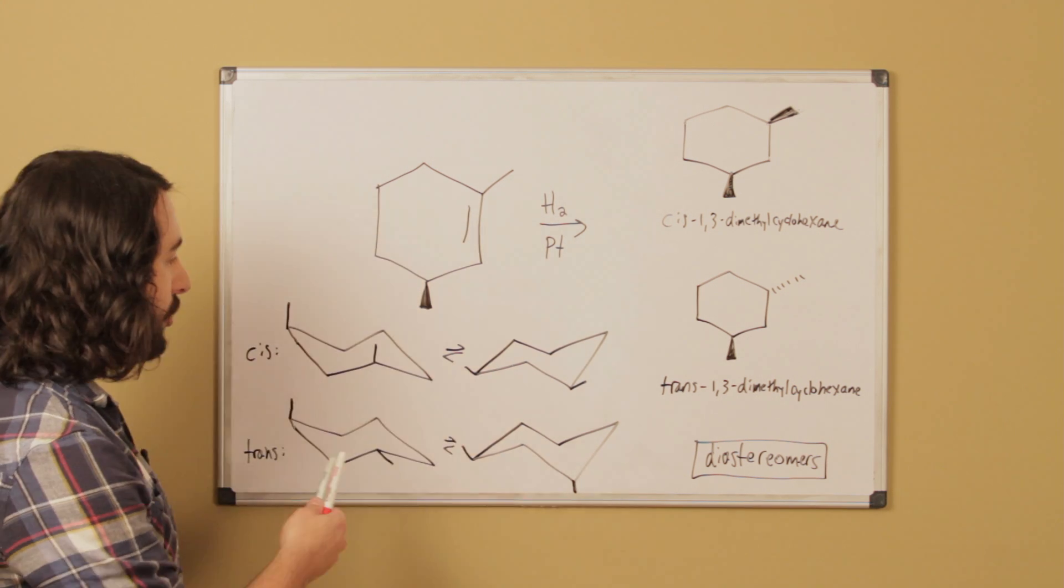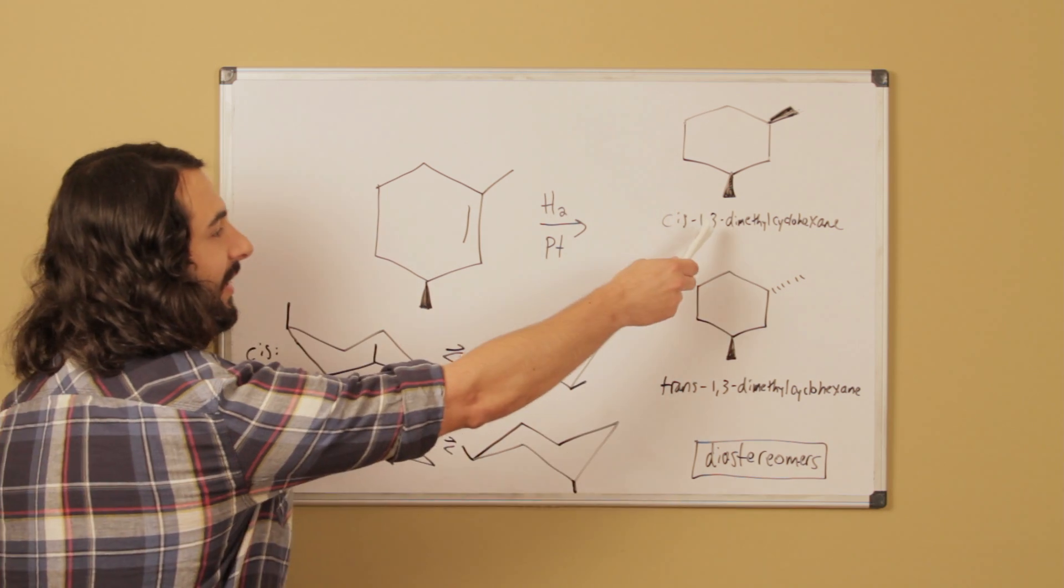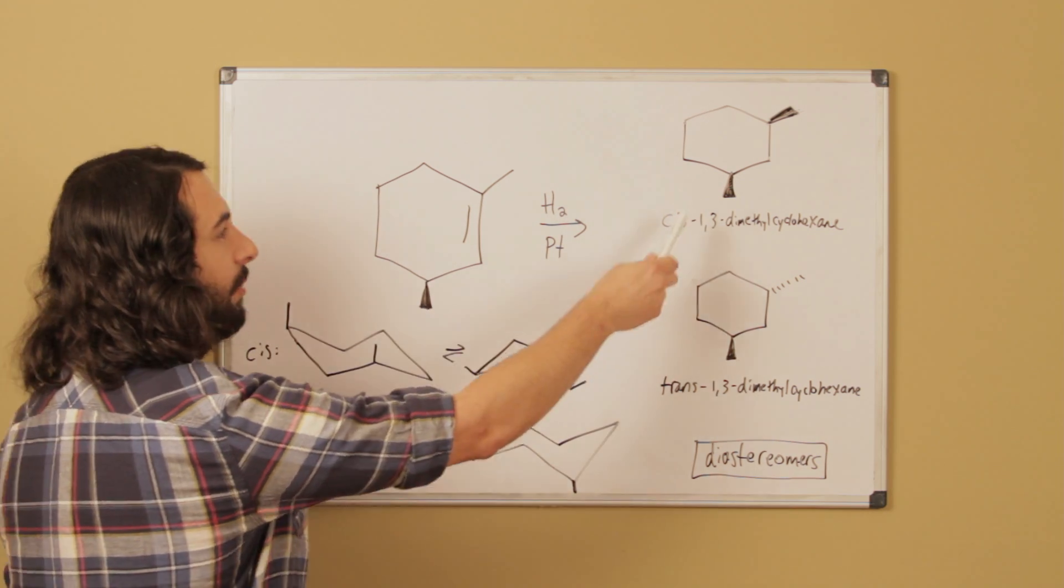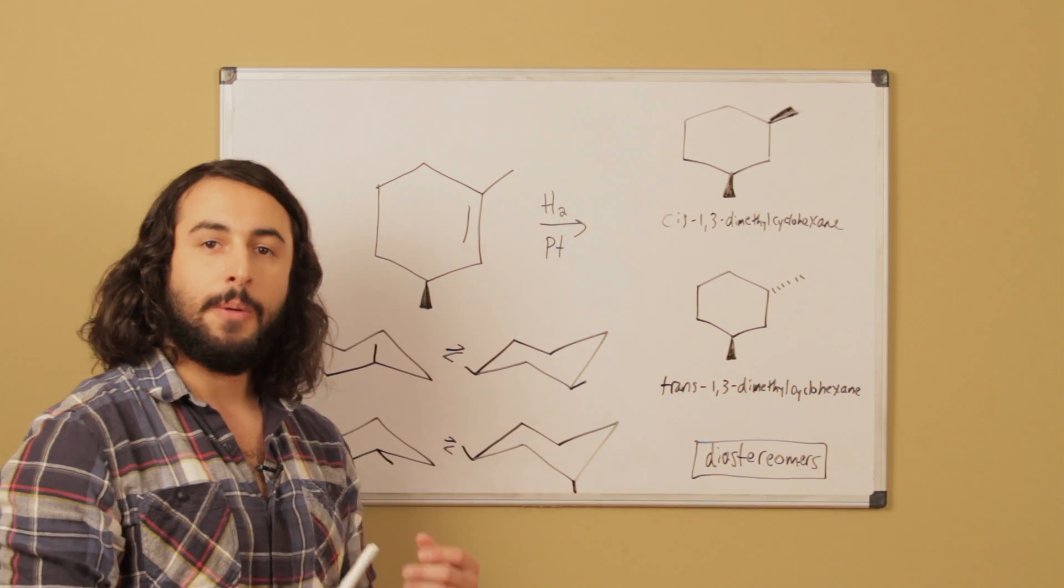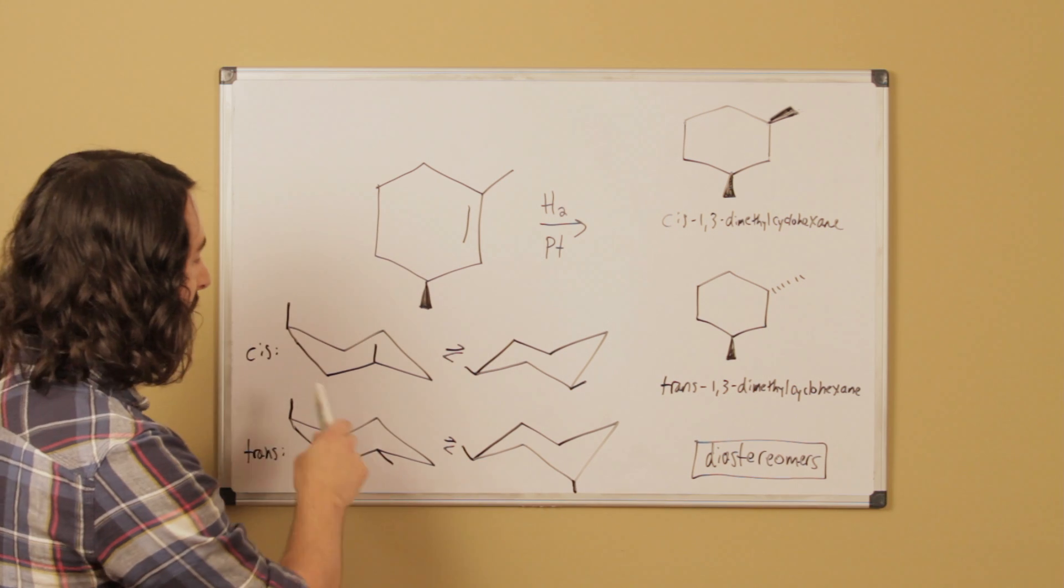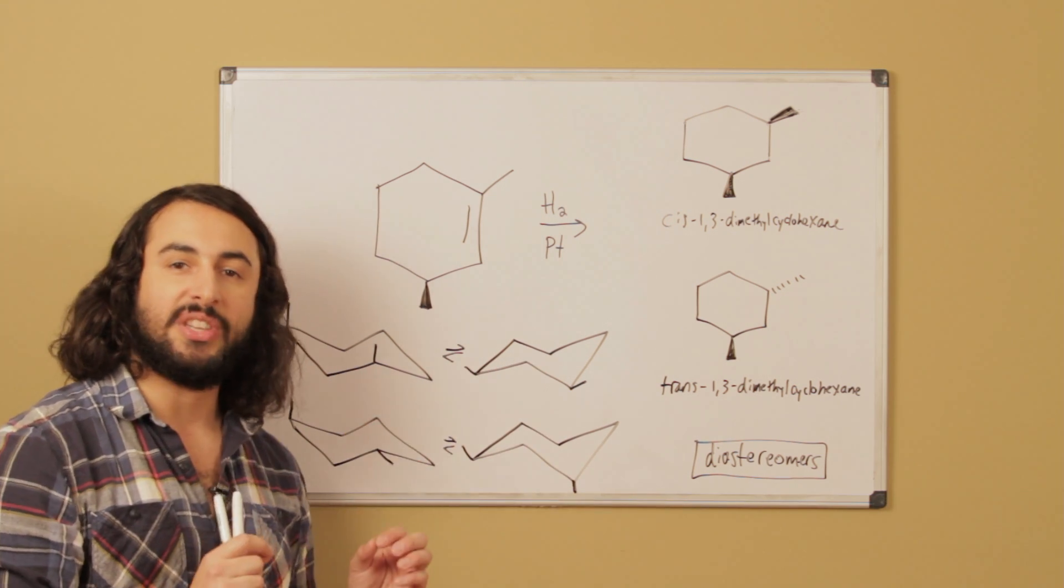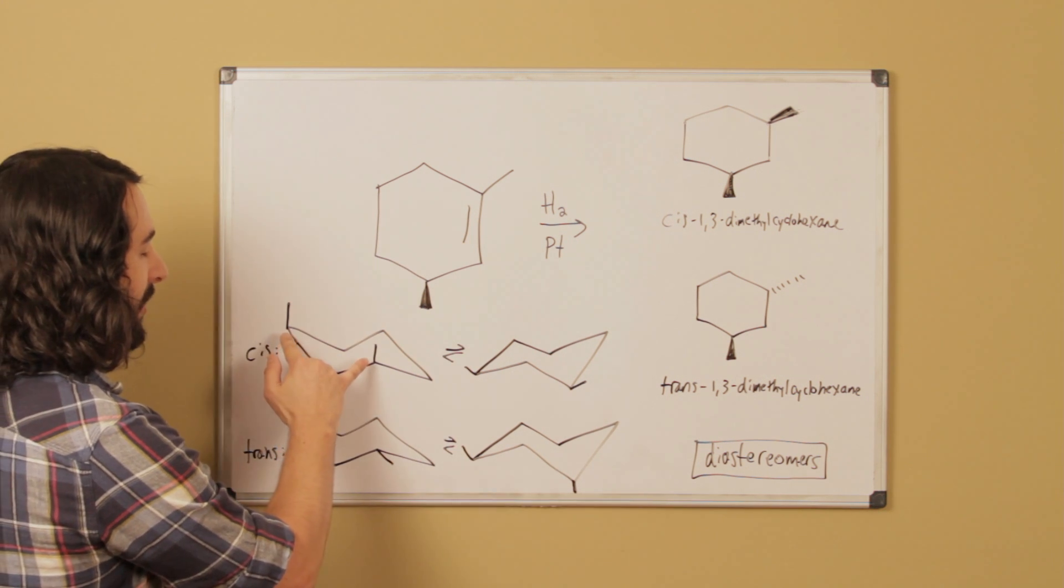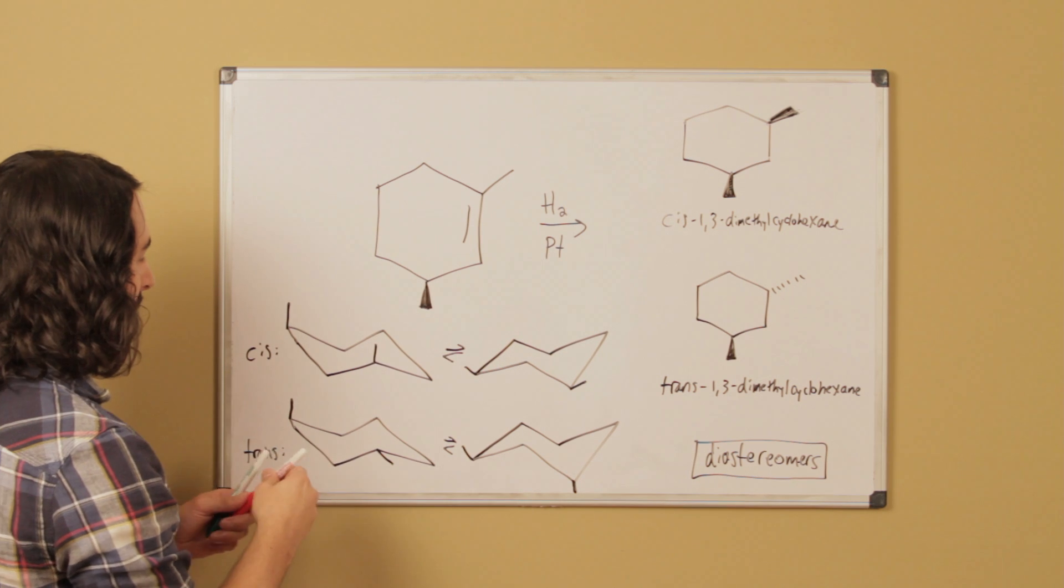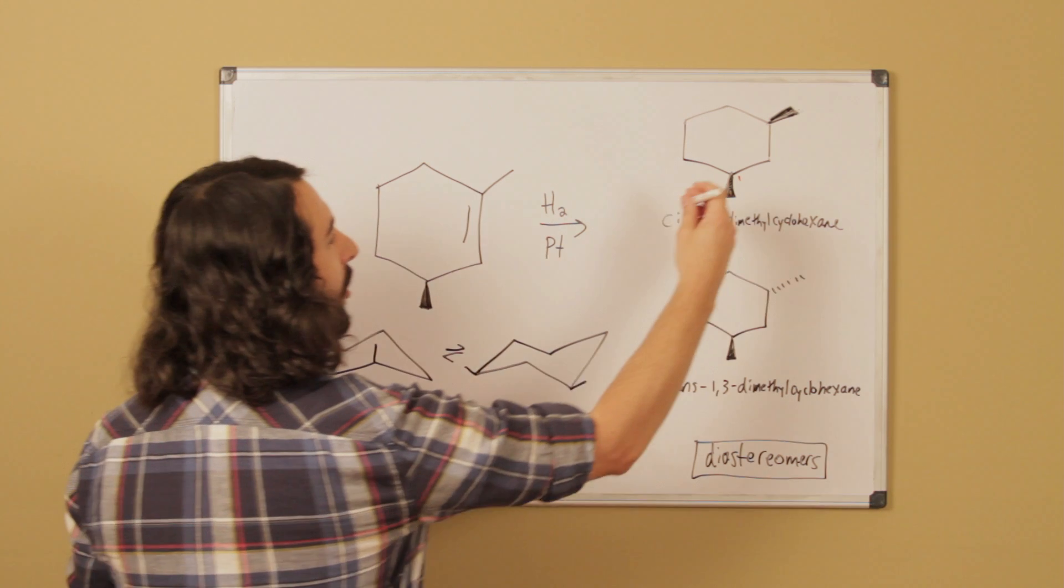If we want to talk about the thermodynamic favorability, we're going to have to draw the chair conformations. I've drawn the two chair conformations for each molecule. This is the cis. For cis, if these are both up, both on the same side of the ring, both methyl groups are up. That means whichever chair you've chosen to draw, the methyl groups have to be on the same side. I've arbitrarily chosen these two carbons. I'm calling this carbon one and that carbon one, then going around like this.